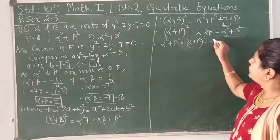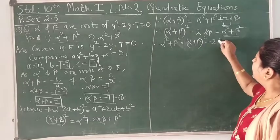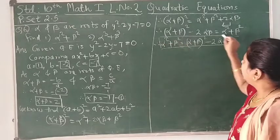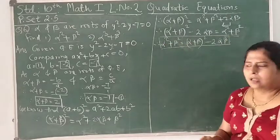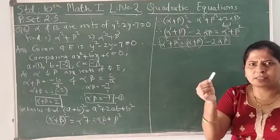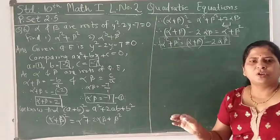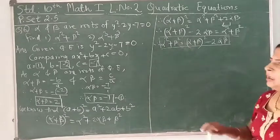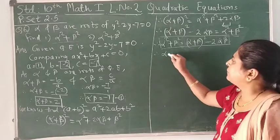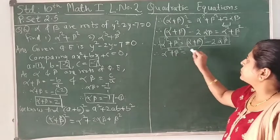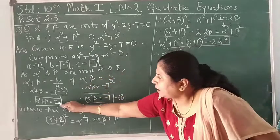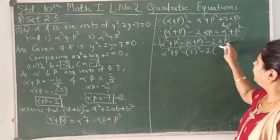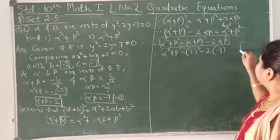This identity might be a little difficult to remember directly, but if you derive it step by step like this, you can do it easily. Now substitute the values: α² + β² = (α + β)² - 2αβ = (2)² - 2×(-7), using the values from equation 1.